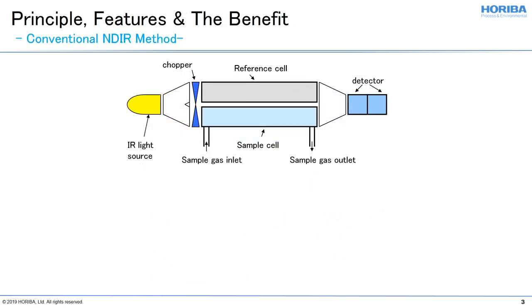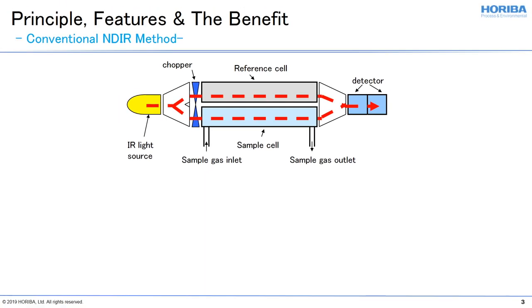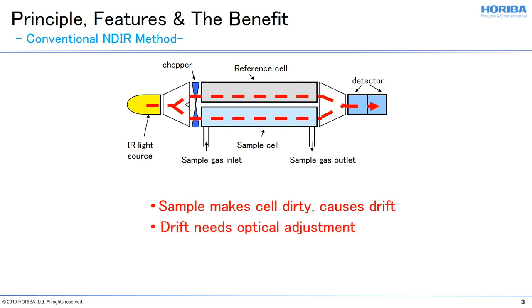A method was developed to overcome the issues associated with light detection and sensitivity. The improvements included one light source, one detector, and two cells. This technique splits the light beam. Unfortunately, the issue of dirty sample gas entering the sample cell still exists and optical adjustments are still required. Also, the light needs to be split equally in half, and vibration can cause problematic measurements that must be adjusted by a skilled technician.